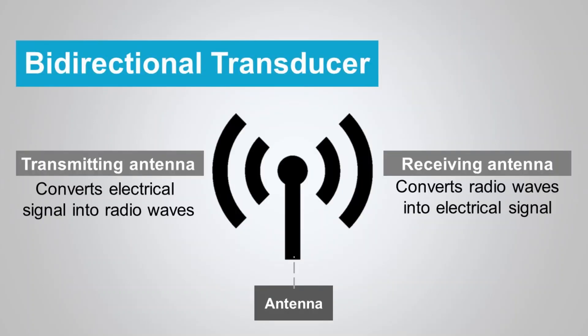Bidirectional transducers are capable of converting physical quantities into electrical signals and vice versa. For example, antennas in the transmitting mode convert electrical signals into radio waves, while in the receiving mode they convert radio waves into electrical signals.